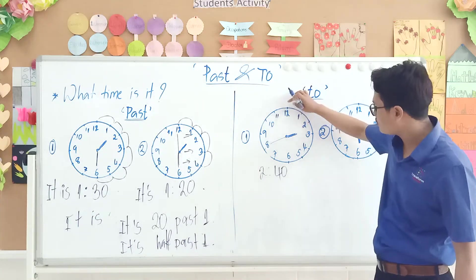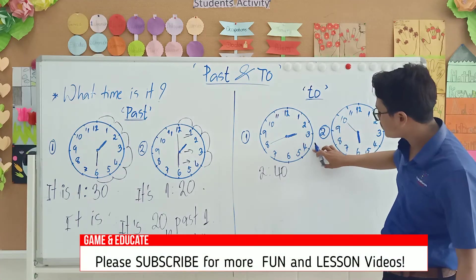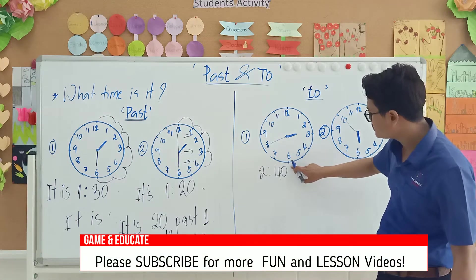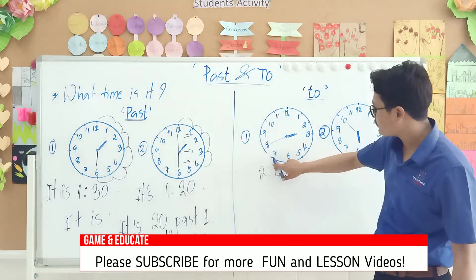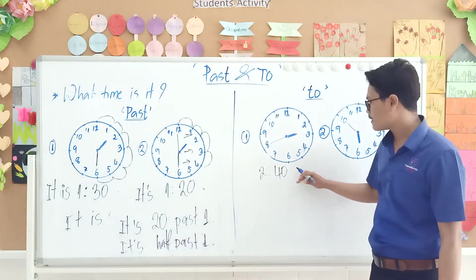I will count: 5, 10, 15, 20, 25, 30, 35, and 40. So 2:40.